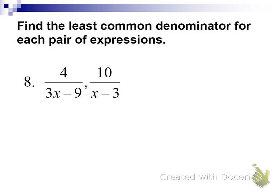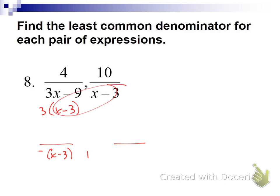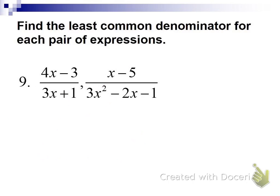For number 8, the denominators are not the same. Make sure both denominators are factored completely — we can factor out a 3 from one, so it becomes 3(x − 3). Now they have (x − 3) in common but not the factor of 3. So the LCD is 3(x − 3). The first fraction wasn't missing any factor, so we don't multiply it. The second fraction was missing the 3, so multiply 10 by 3 to get 30.